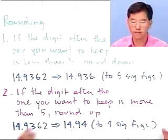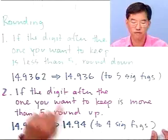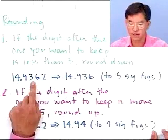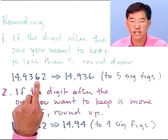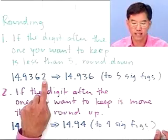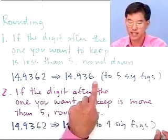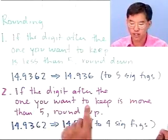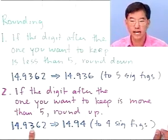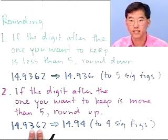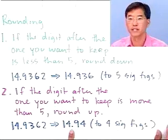The rules for rounding are: if the digit after the one you want to keep is less than five, round down. For instance, rounding 14.9362 to five significant figures — the digit to keep is 6, the next digit is 2, so we round down and keep 14.936. If the digit after the one you want to keep is more than five, round up. Rounding 14.9362 to four significant figures, we look at the 3 and the following 6 — since it's more than five, we round up to 14.94.